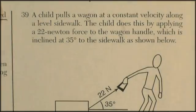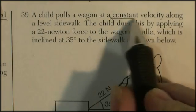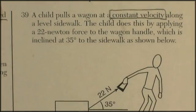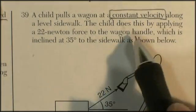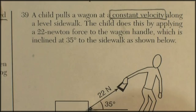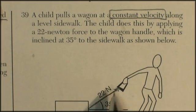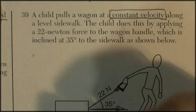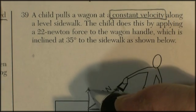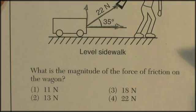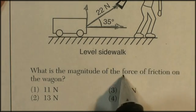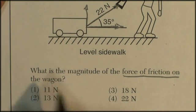Question 39. A child pulls a wagon at a constant velocity. That force is 0 along the level sidewalk. The child does this by applying 22 newtons of force at 35 degrees to the sidewalk. 35 degrees. So part of the force, part of that 22 is pulling it forward. Part of that 22 is lifting it up. And the question is, what is the magnitude of the force of friction on the wagon?